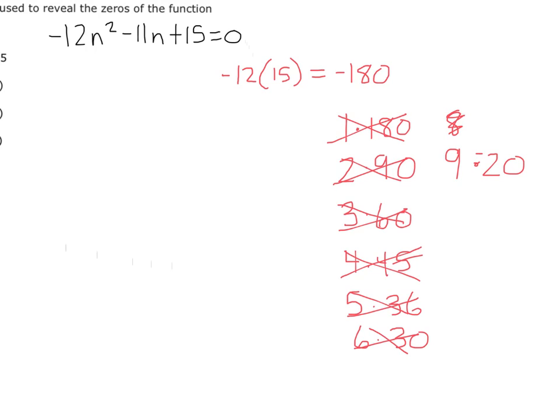Now let's review. What is negative 20 times 9? Negative 180, which is what we need. And what is negative 20 plus 9? Negative 11, which is what we need. Now remember what we do is we take this negative 11n and we take it out of here, and we replace it with 9n minus 20n. So I'm going to rewrite this problem as negative 12n squared, but instead of writing negative 11n, I'm going to write plus 9n minus 20n plus 15 equals 0.